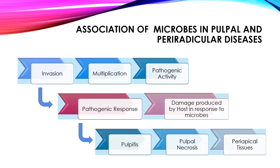Because of this sequence of events, there is inflammation of the pulp — pulpitis — which progressively leads to pulpal necrosis. Once the pulp is necrosed, microorganisms have a pathway to reach the periapical tissues and cause an infection there.